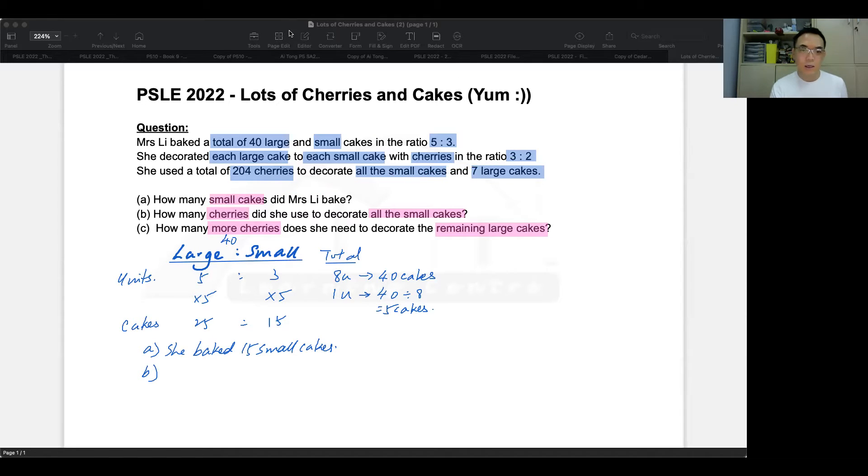So let's use these numbers now. I'm going to use a different color, so it stands out. And now I'm going to write cherries instead of cakes. This is still based on the ratio of large to small. But we are not going to use all the large cakes, because it says here that she only used 204 for seven large cakes, not all of them. So for that reason, this is seven. And this is all the small cakes, 15. So these are actual cakes.